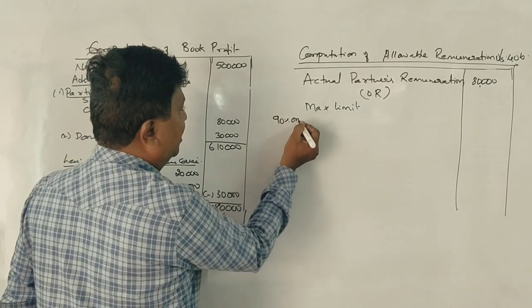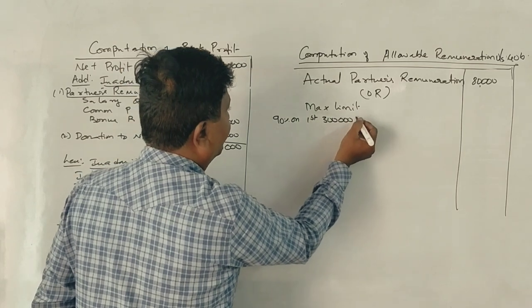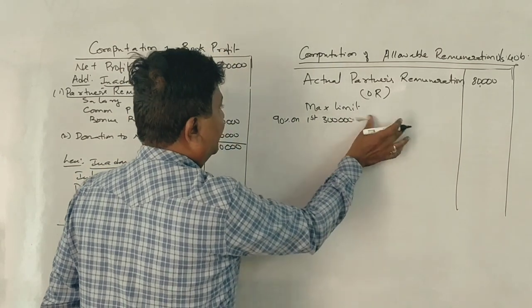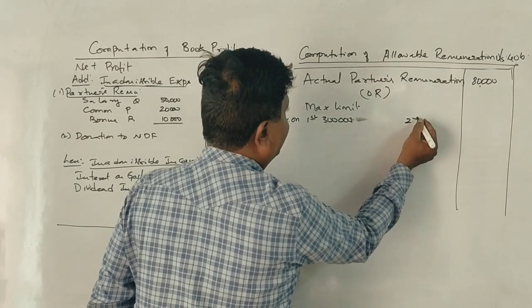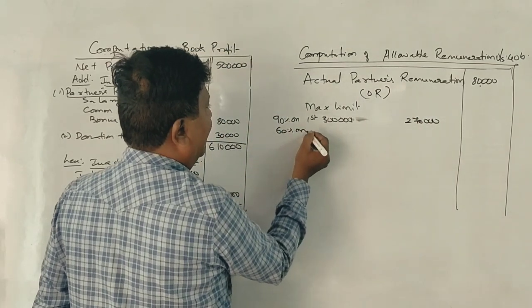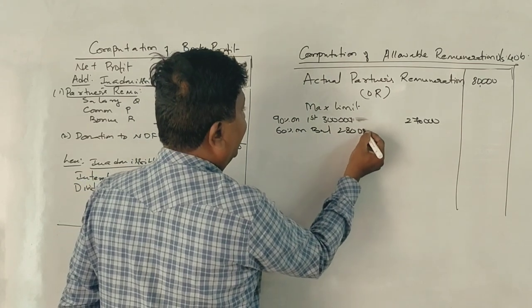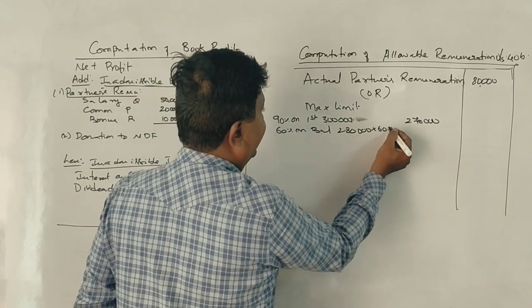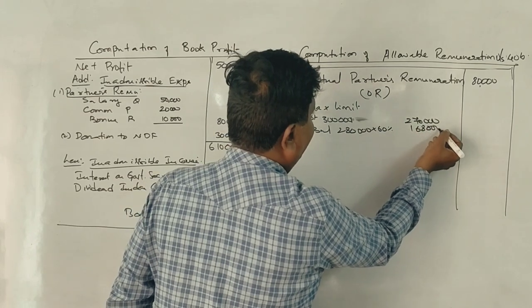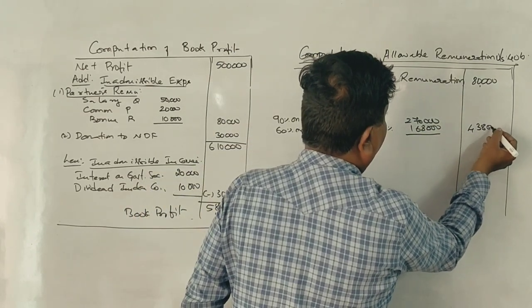90% on the first 3 lakh. Correct? That's 2,70,000. 60% on balance, 1,60,000. Total allowable remuneration is 4,30,000 rupees.